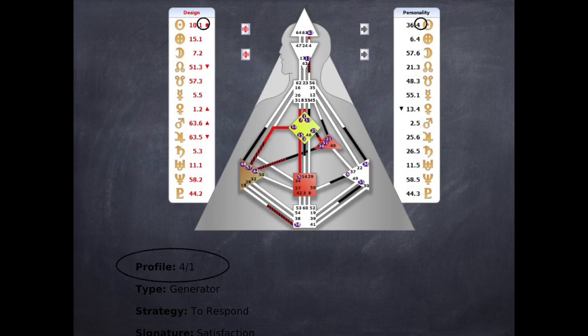The profile lines come from the conscious and unconscious sun in the body graph. The first number is always going to be the conscious sun and the second will be the unconscious sun. People might feel they connect more with the first number than the second, depending on their age, because after the age of 40 more people will become aware of their second number — also called their unconscious number. But just because someone's not aware of it doesn't mean it doesn't exist in the personality and character. Ultimately, both profile lines are equally important.